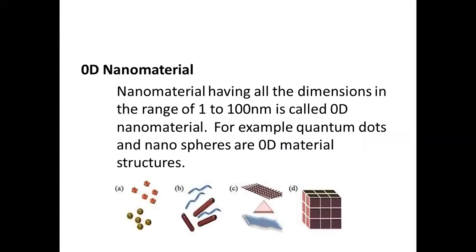First of all, you have zero-dimensional nanomaterials. Zero-dimensional nanomaterials have all dimensions in the range of 1 to 100 nanometers. Examples of zero-dimensional nanomaterials are quantum dots and nanospheres.